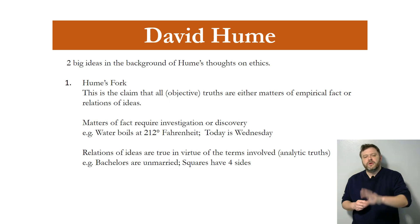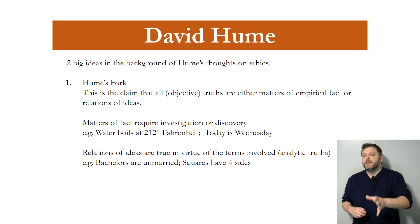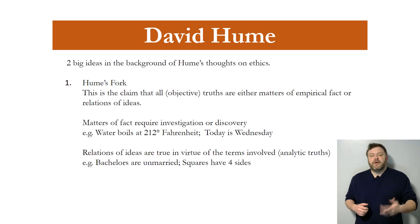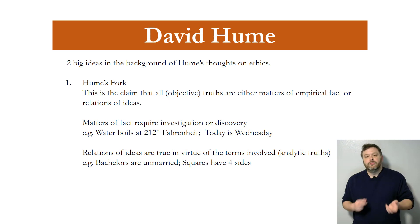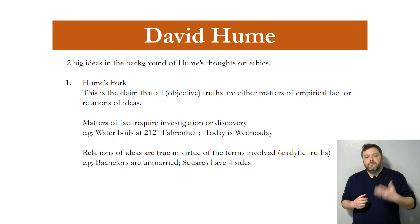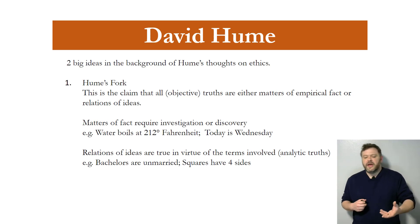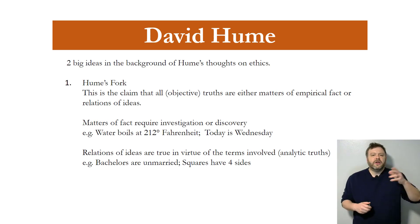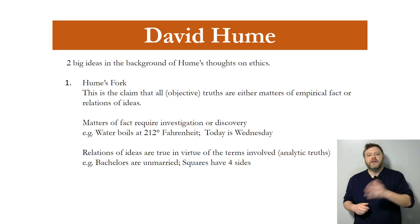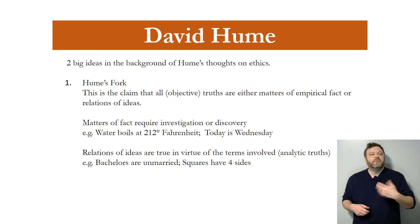We're going to look at two arguments each in turn, but I need to lay a little background first. This is not his argument — this is just the background. Hume has this principle we now call Hume's Fork: there are really only two kinds of claims we can determine rationally or objectively. These are either what he calls matters of fact or relations of ideas. Matters of fact are the kinds of things that require empirical investigation — you need to figure out the way the world is in order to determine if these claims are true.